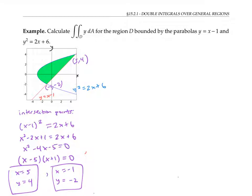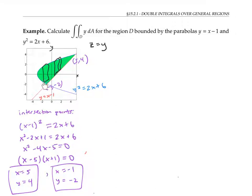Now let's work on finding the integral. We can think of the double integral as representing the volume between the surface z equals y and the portion of the xy plane within this region. Actually, it's better to think of it as a net volume, since the surface z equals y lies above the xy plane for part of the region and below for another part. In the previous example, we sliced our volume by planes parallel to the yz plane to get vertical cross sections. But in this example that would be complicated, because some cross sections stretch between the blue curve and the red curve, while other cross sections have both endpoints on the blue curve.